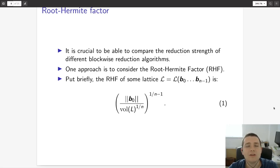One way to gauge the quality of these algorithms is using a measure called the root Hermite factor, or RHF. Put briefly, the root Hermite factor of some lattice L is the length of the first vector in the lattice divided by the normalized length that we might expect. This term in the denominator is the length you might expect if the norms of all vectors were evenly distributed. Because this quality is independent of the rank of the lattice, we normalize by this term 1 over n-1. This is just to normalize the quality so we can compare across many different lattices.